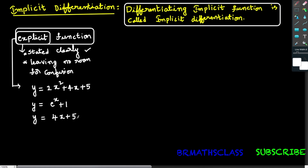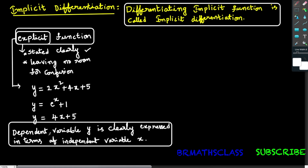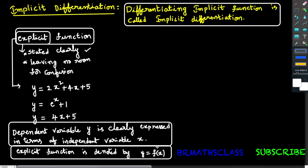By seeing these three examples, you may get some idea. Explicit means which is stated clearly. Explicit function is a function in which dependent variable y is clearly expressed in terms of independent variable x. Explicit function is denoted by y equal to f of x.